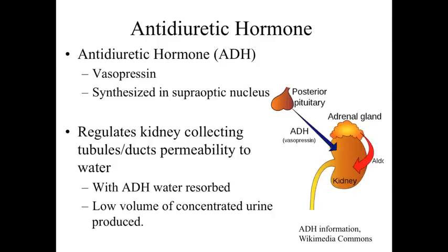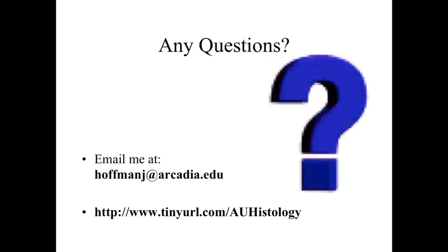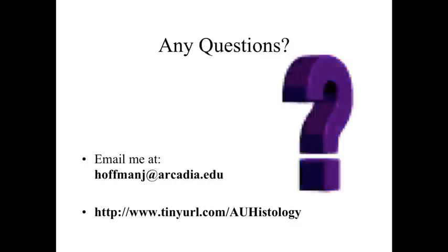ADH, as discussed previously in the urinary system lecture, is antidiuretic hormone, also known as vasopressin, synthesized by cells within the supraoptic nucleus but released through the posterior pituitary. ADH regulates kidney collecting tube and collecting duct permeability to water, so that in the presence of ADH, water is reabsorbed, producing a low volume of highly concentrated urine. And that's going to finish up what we're going to say about the pituitary gland.